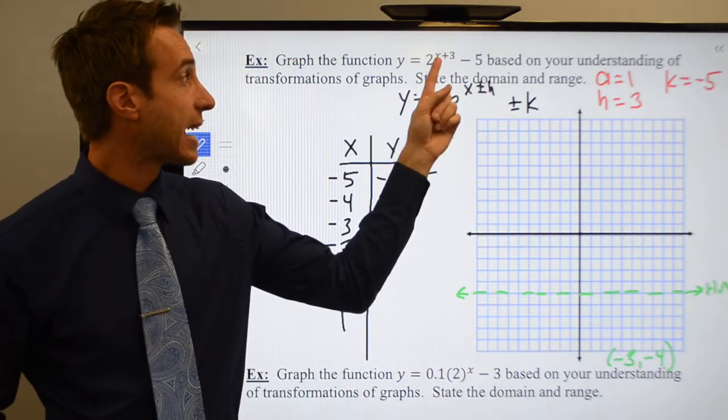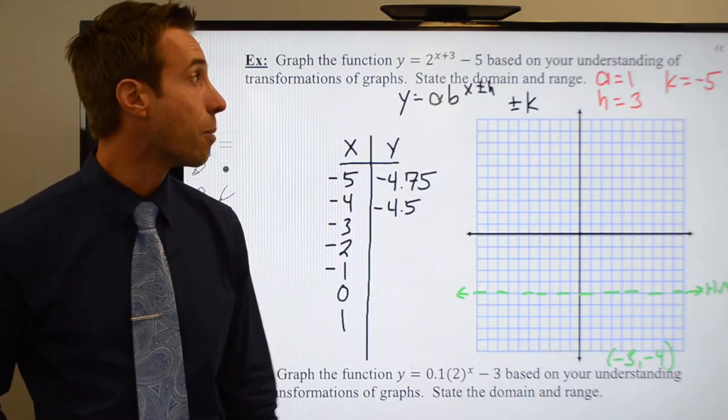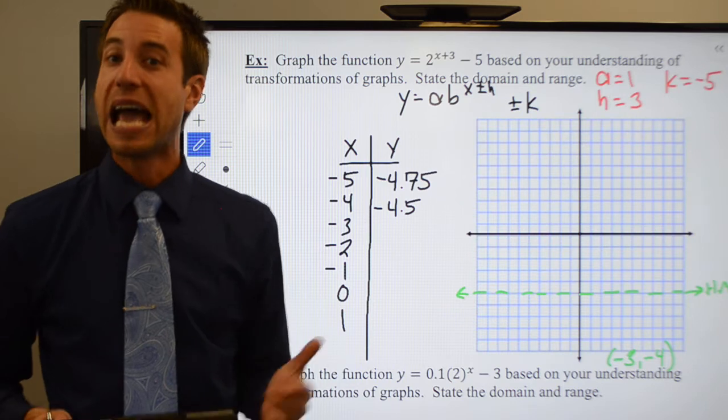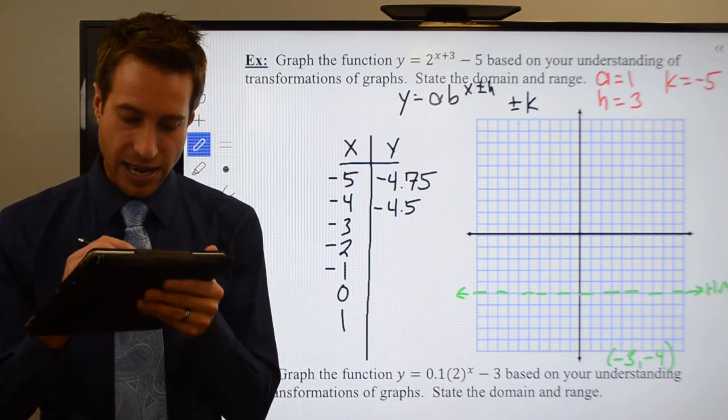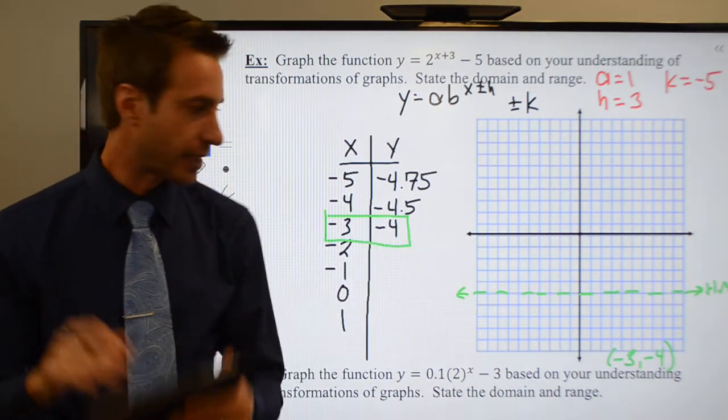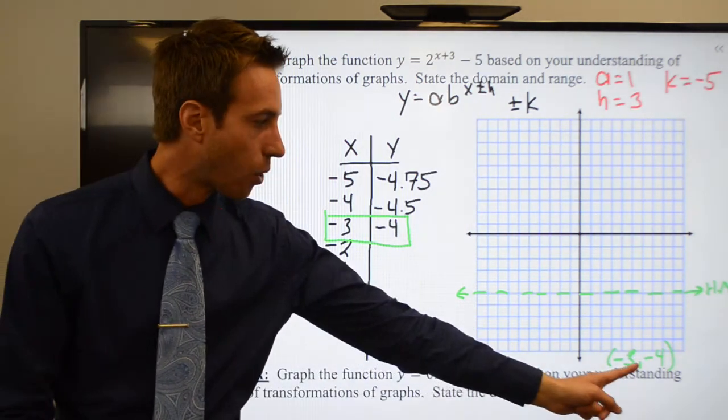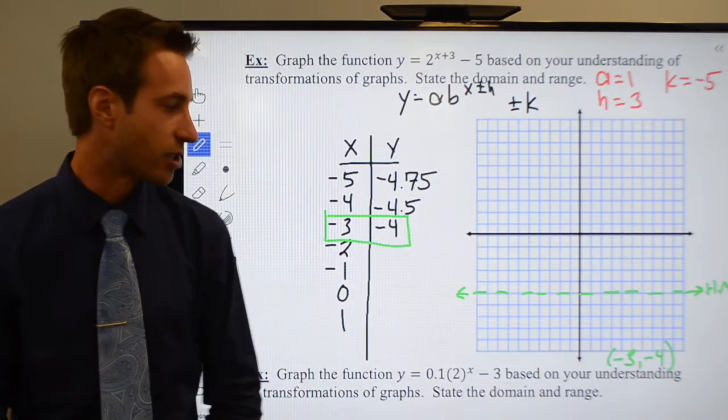Plug in a negative three. Negative three plus three is zero. Two to the zero power is one, and one plus a minus five is a negative four. Look at that. Negative three, negative four, and I predicted I would get negative three, negative four. This transformation stuff is awesome.